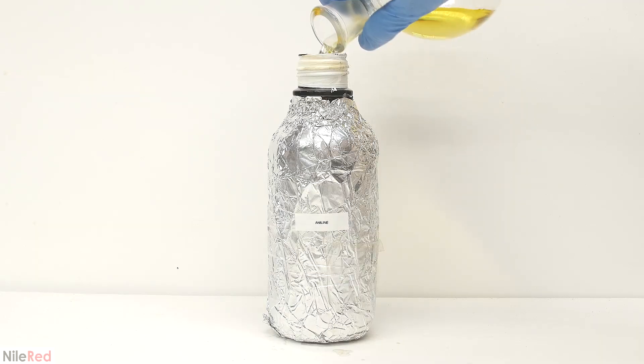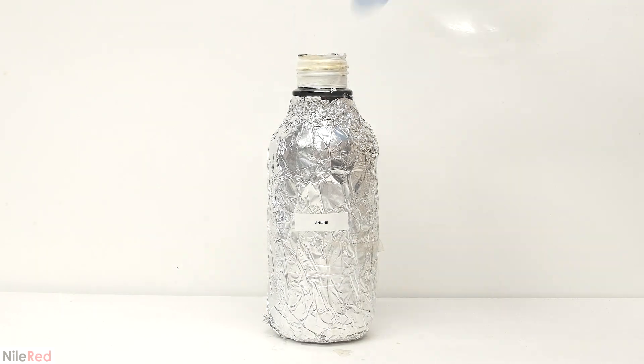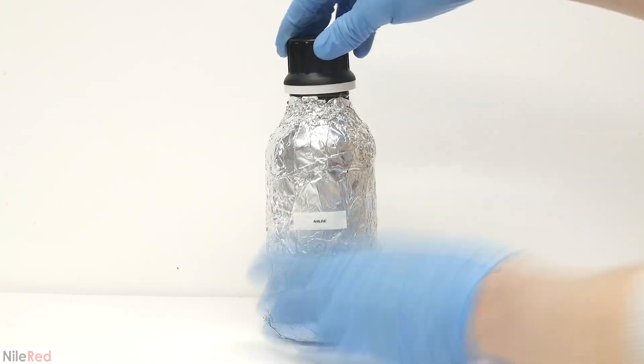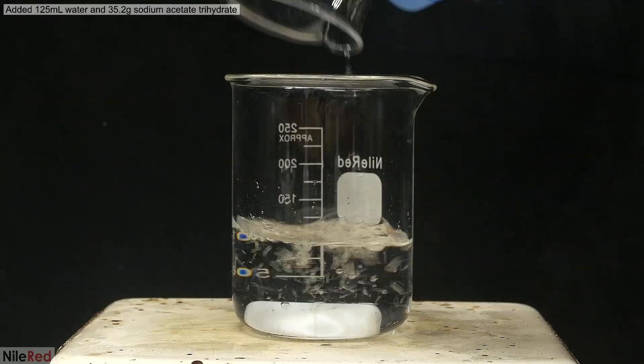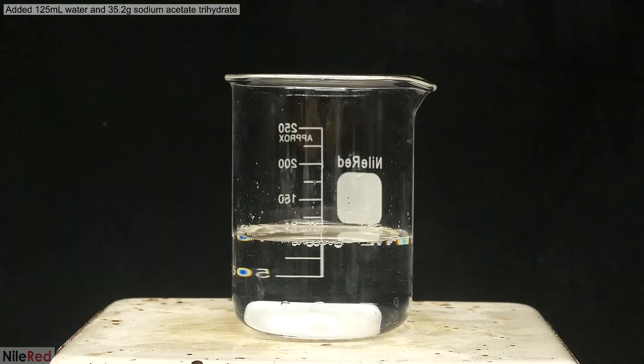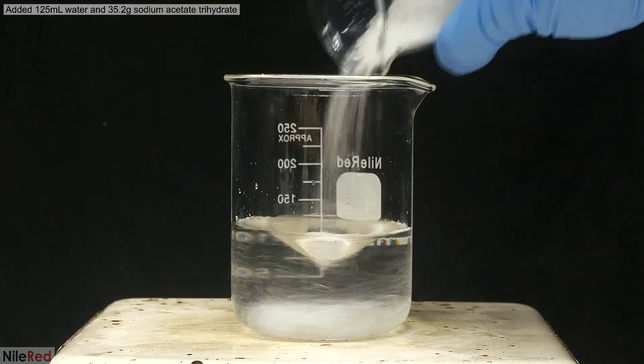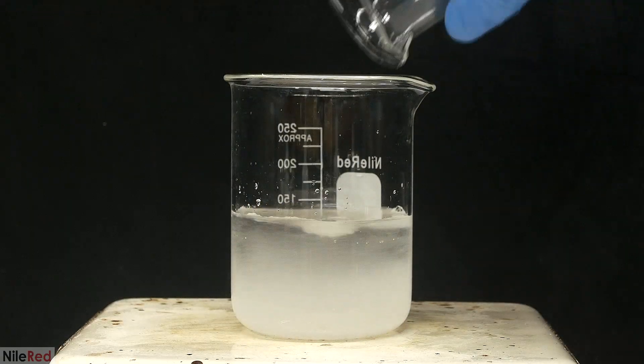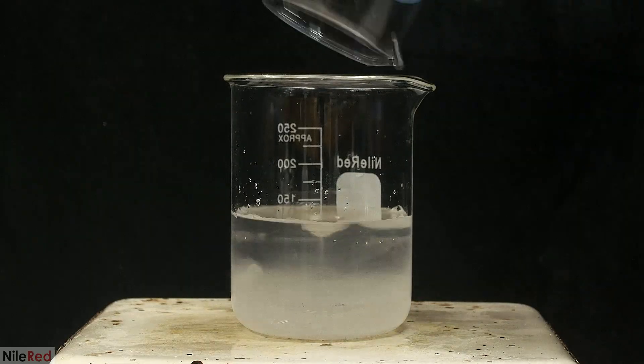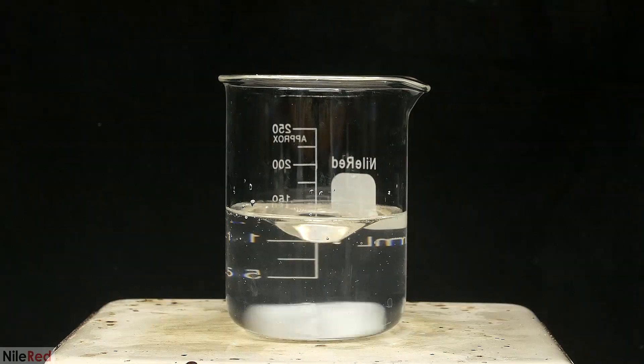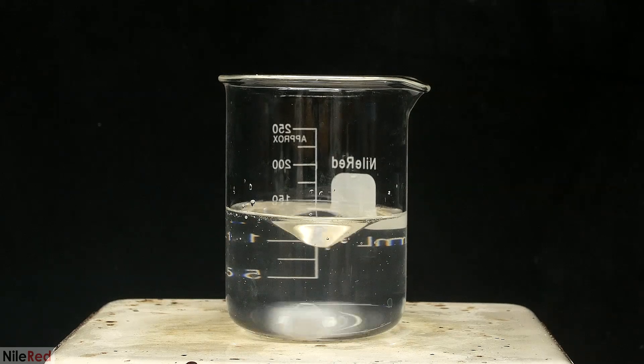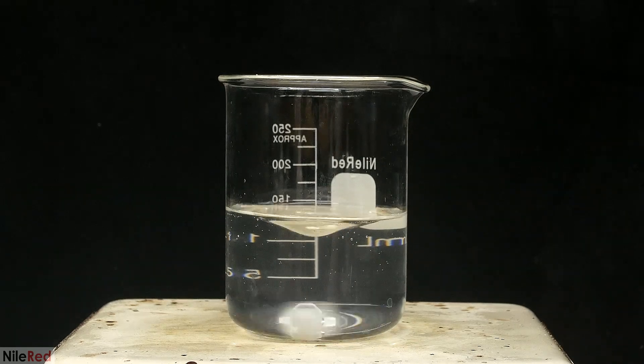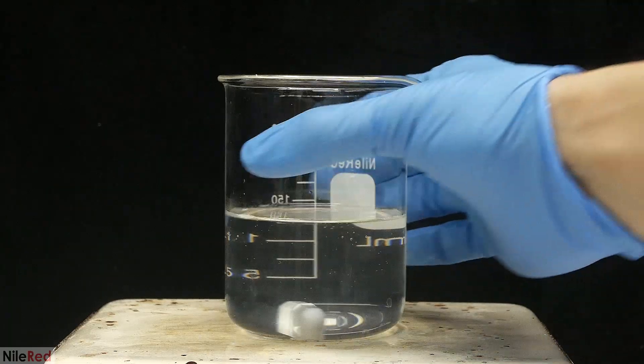Okay, so now that I know that the aniline is good, I can proceed on to the reaction. To start things off, I add distilled water to a beaker, turn on the stirring, and dump in some sodium acetate. This is going to take a couple minutes to dissolve. I come back about five minutes later, and I have a nice clear solution. I don't need this immediately, and it's temporarily placed on the side.